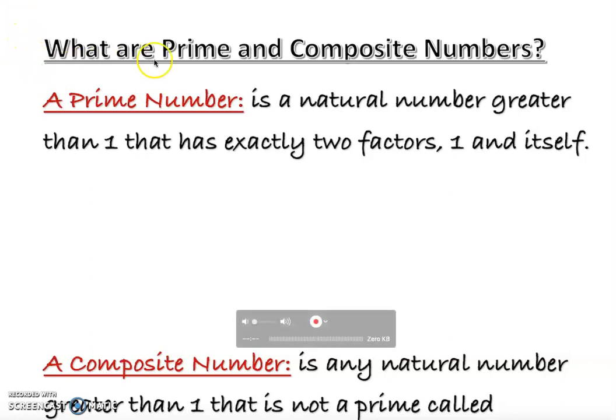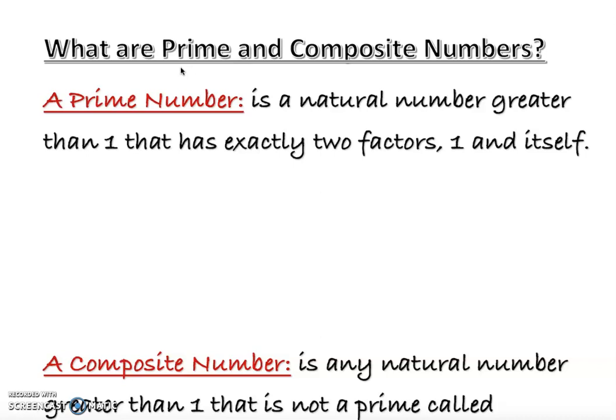Hi, today I'm going to talk about prime and composite numbers. Prime and composite numbers are very important in our number system, especially in number theory. When you take higher-level math classes, you're going to come across these numbers.